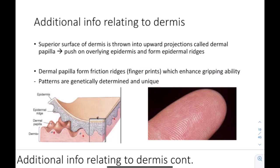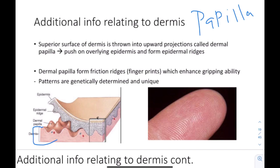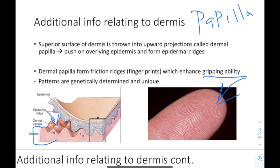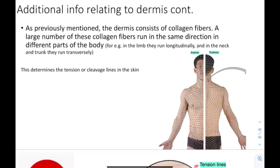Let's talk more about the dermis. In the dermis there is something called dermal papilla. Papilla means a finger-like projection — you can see these finger-like projections here. They cause an indentation in the epidermis, which creates epidermal ridges, or fingerprints. The fingerprints or epidermal ridges are due to the dermal papilla. They are important for gripping ability, and these patterns are genetically determined and unique — each individual has different fingerprints.